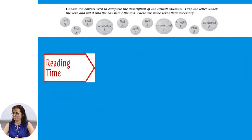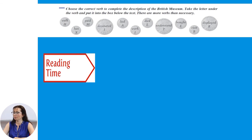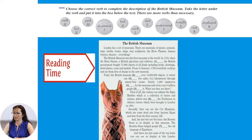Now let us pass to the next task. Choose the correct verb to complete a description of the British Museum. Take the letter under the book and put it into the box below the text. There are more verbs than necessary.